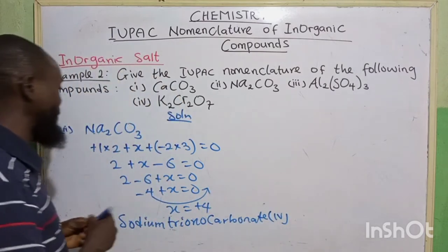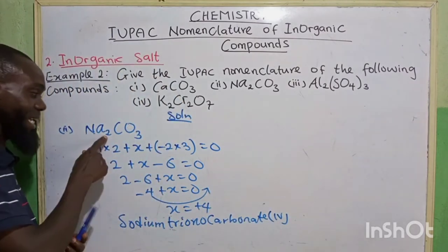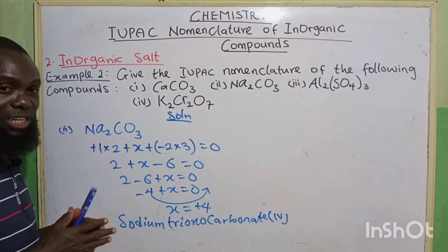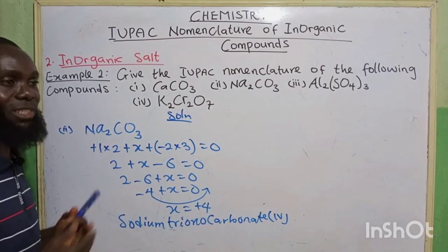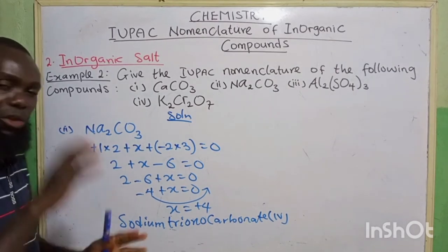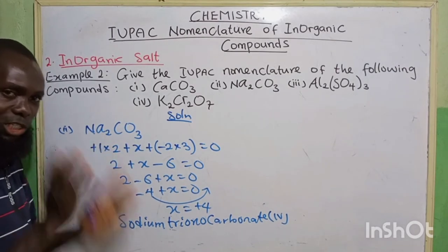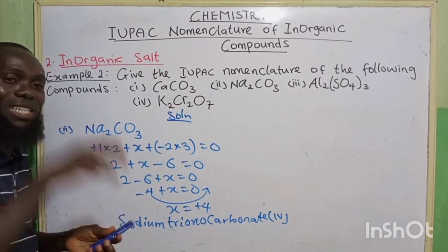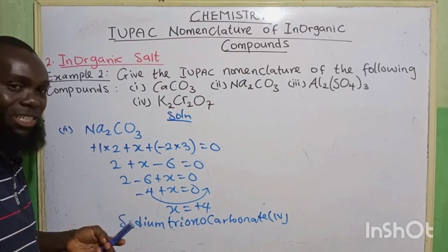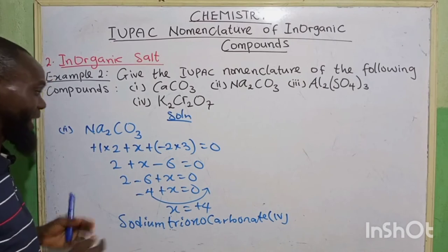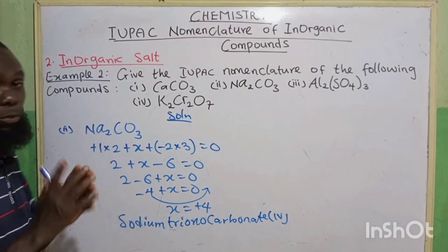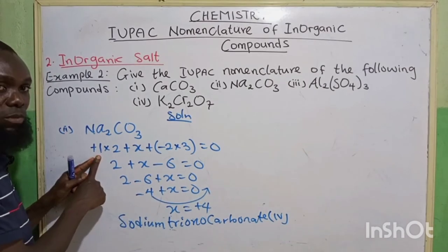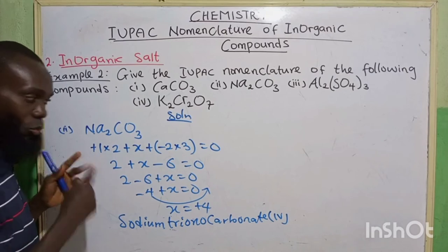Sodium only possesses one oxidation number, which is plus 1, so we do not need to specify the oxidation state in the name. But if it is a transition element that normally has various oxidation states, we need to specify their oxidation number. In this case, sodium only possesses one oxidation number, which is plus 1, so we move on.